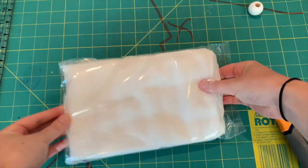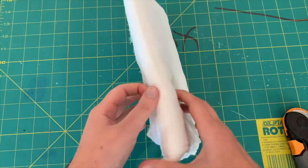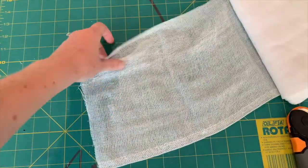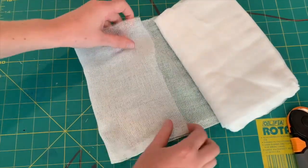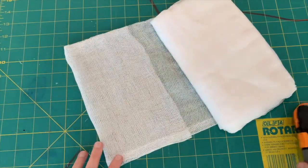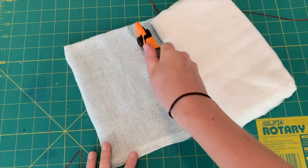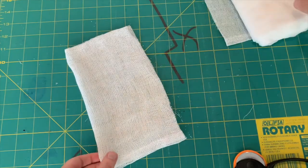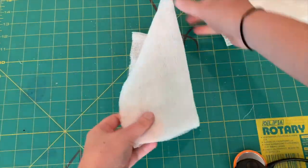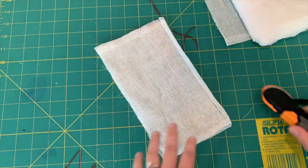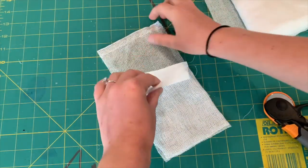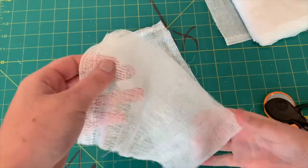I decided to use cheesecloth for the body of my ghost. To do this, fold the cheesecloth and cut using scissors or a rotary cutter. You will also need to cut the fold. Take the first two layers of cheesecloth and place them like so.